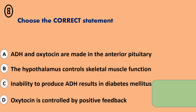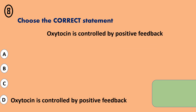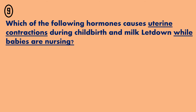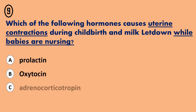The correct answer is... Question 9. A - Prolactin. B - Oxytocin. C - Adrenocorticotropin. D - Calcitonin.